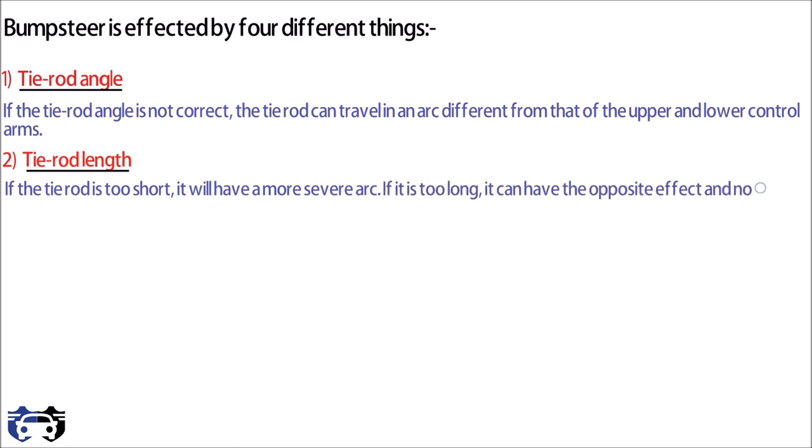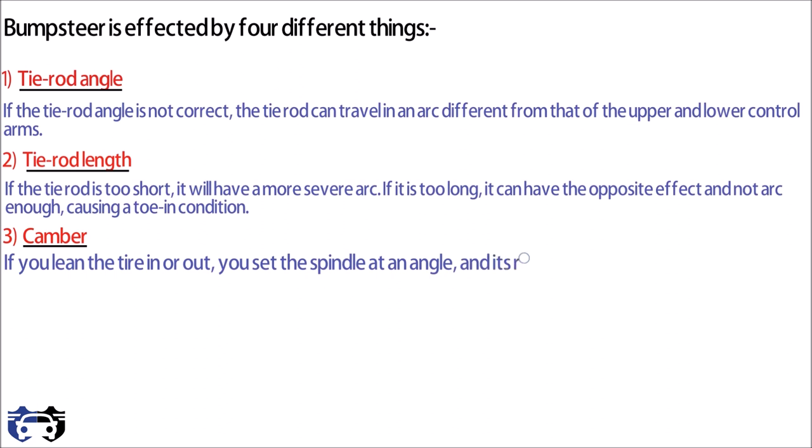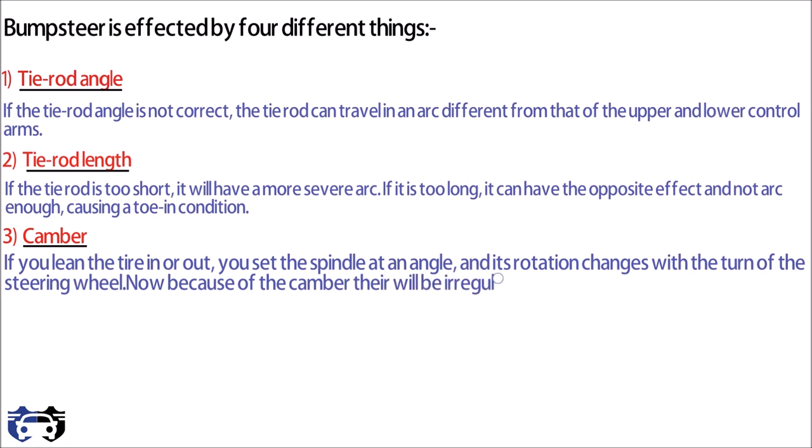Third is the camber. If you lean the tire in or out, you set the spindle at an angle and its rotation changes with the turn of steering wheel. Now because of camber there will be irregular rotation of tie rod and it will cause bump steer.